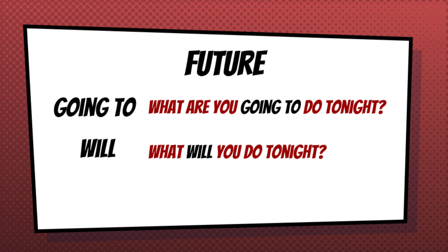Future. Até agora nós vimos going to — por exemplo, what are you going to do tonight? — e nós vimos também will: what will you do tonight? Lembrando que quando nós temos going to, é o verbo to be que vai com going. Se tiver to be, tem que ter -ing. Essas duas coisas vão juntas. E com will, que é um verbo auxiliar para o futuro: what will you do tonight? São duas formas para perguntar o que você vai fazer hoje à noite.